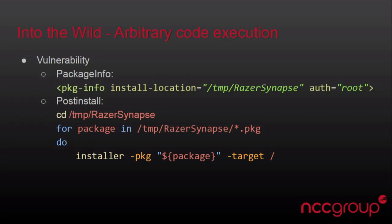Next we have a vulnerability where in the package info, it says we're going to extract the payload into /tmp — specifically this Razer Synapse place — using root privileges. Everything just runs as the super user. During the post installation, we change into that directory and then look for *.pkgs and install them, once again with root privileges.